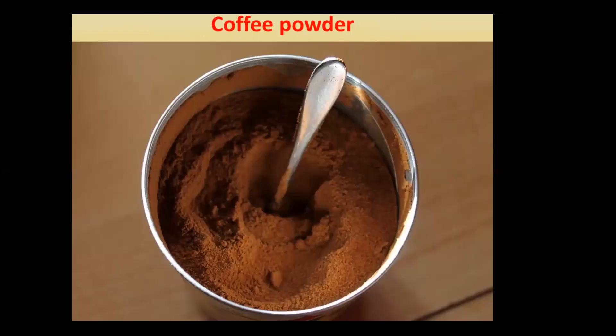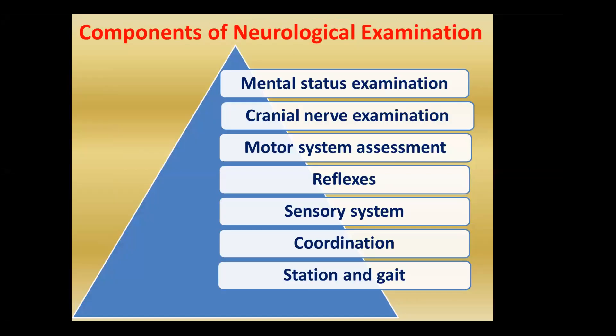Now coming directly to the components of neurological examination. Neurological examination implies identifying any problem in the nerve by examination. The main components are mental status examination, cranial nerve, motor nerve, reflexes, sensory system, coordination, station, and gait.